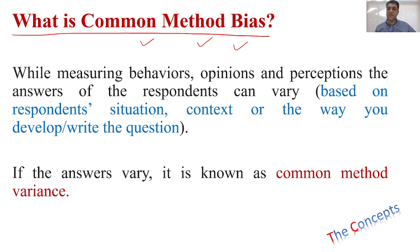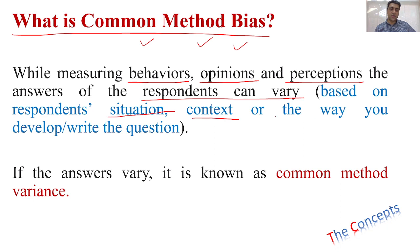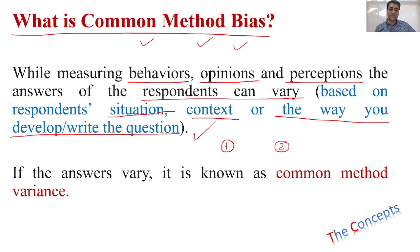Starting with the definition: while measuring behaviors, opinions, perceptions, and other things like this, the answers of the respondents can vary based on the respondent's situation, context, or the way you have written a question. If you ask the same question at point 1 and then at point 2 from the same person, there are chances that the answer may vary. That variation is known as common method variance.